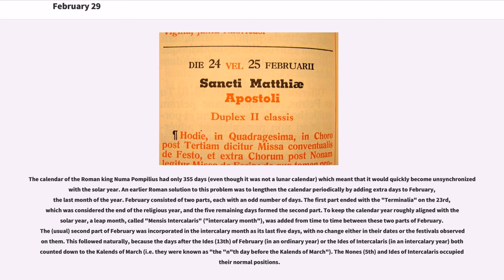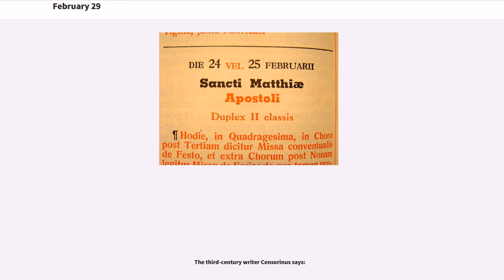This followed naturally because the days after the Ides — the 13th of February in an ordinary year, or the Ides of intercalaris in an intercalary year — both counted down to the calends of March, i.e., they were known as the Nth day before the calends of March. The nones, the 5th, and Ides of intercalaris occupied their normal positions.